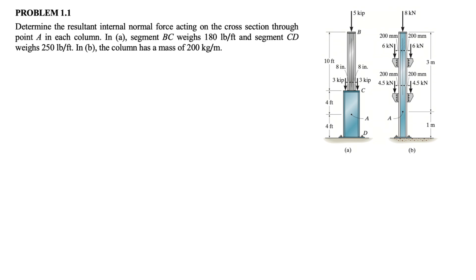In this question, we need to determine the resultant internal normal force acting on the cross-section through point A in each column. So we have two different columns. In part A, segment BC has a weight of 180 pounds per foot.